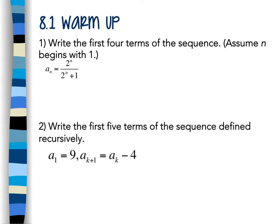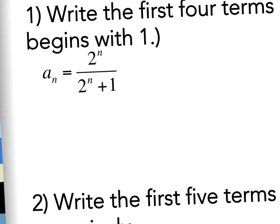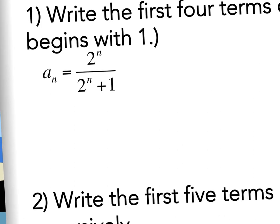For number one it says to write the first four terms of the sequence and assume that n begins with 1. Remember that we'll assume it begins with 1 unless it's stated otherwise. So I want to find the first four terms which means I'm going to find a sub 1, then a 2, then a 3, and a 4. I'm going to take 1 and plug it in everywhere there's an n. So 2 to the 1st over 2 to the 1st plus 1, which is 2 over 2 plus 1, which is 2 thirds.